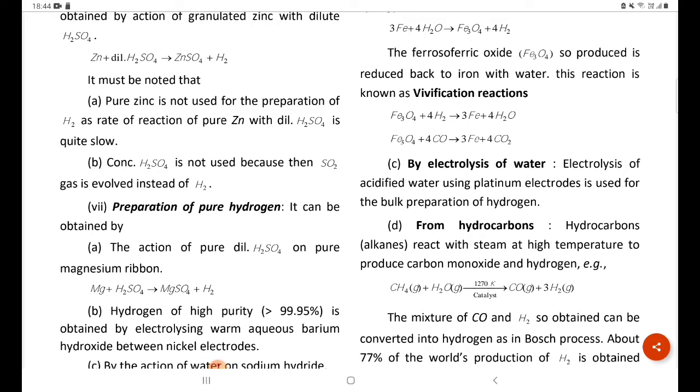Electrolysis of acidified water using platinum electrodes is used for the bulk preparation of hydrogen.